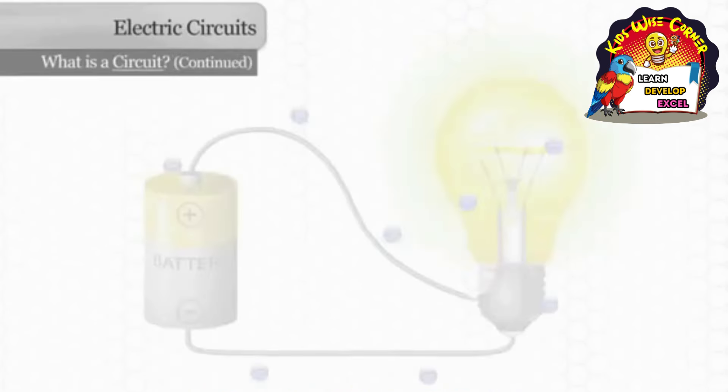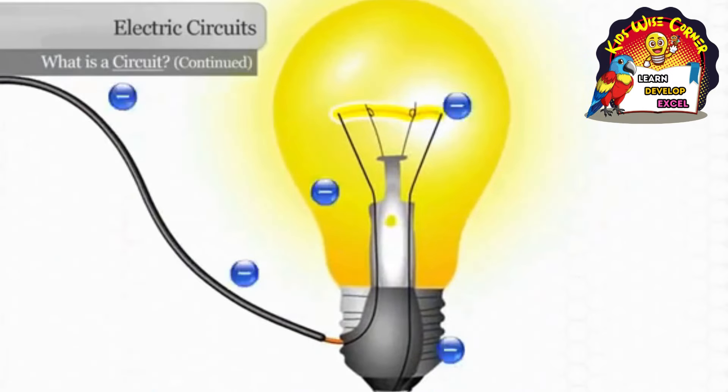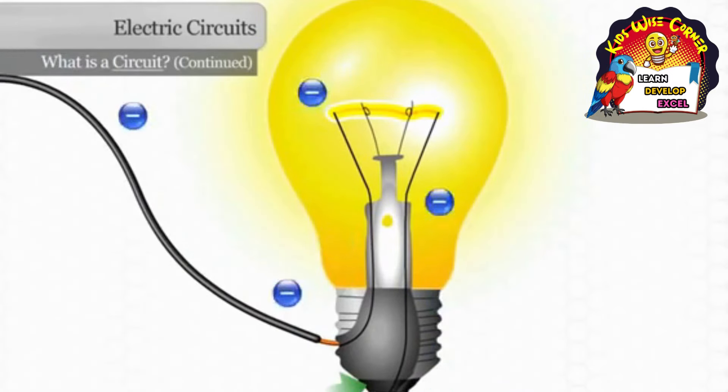Now look closely at the light bulb, and you'll notice that there is an insulator between the conductor that leads up to the filament and the conductor that leads away from the filament. Remember that the atoms of conductors easily accept and pass on electrons. The atoms of insulators do not.